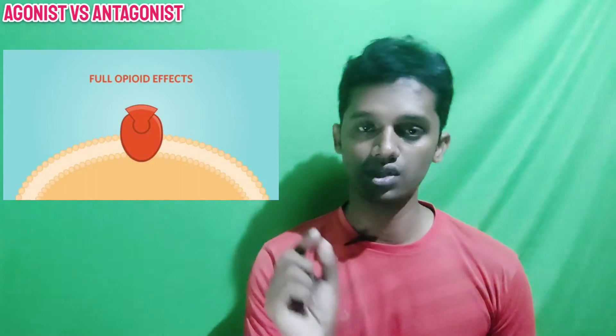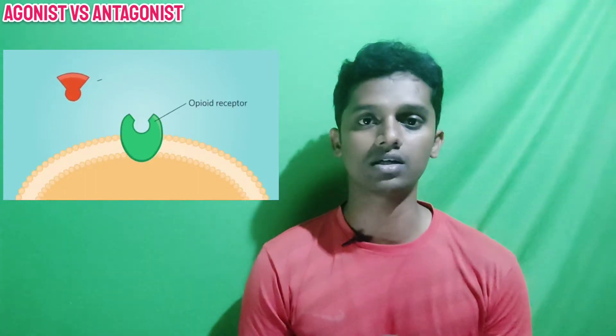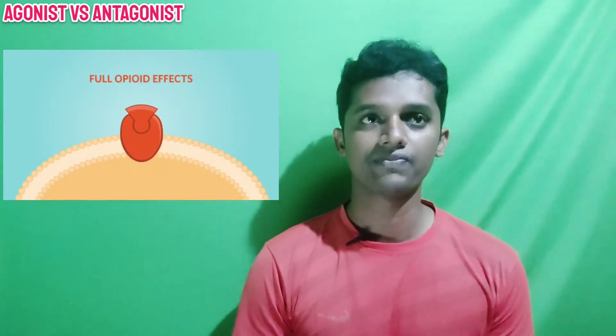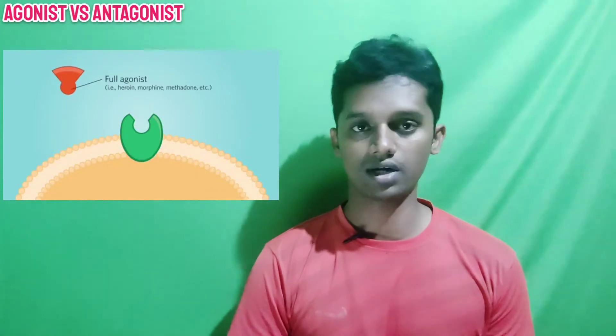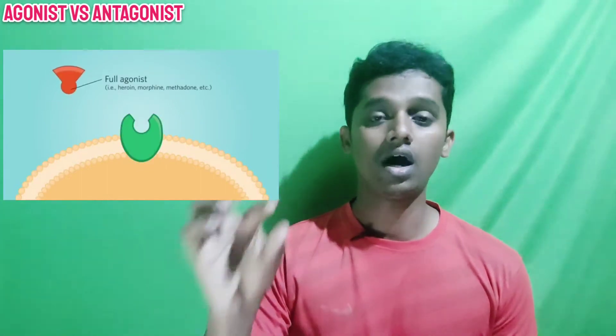For example, in the eye there is a receptor that produces miosis. If you have a drug that produces miosis, that drug is called an agonist. Similarly, there is a receptor involved in heart rate. If an agonist binds to that receptor, the heart rate will increase. So if a substance produces a normal action at the receptor, it is called an agonist.